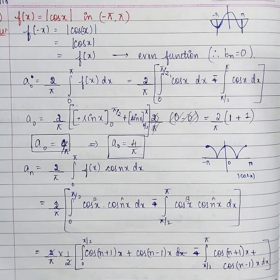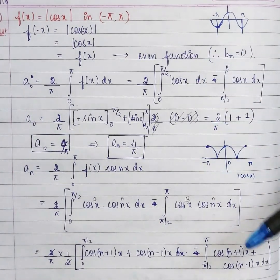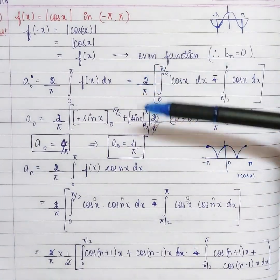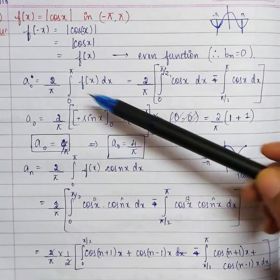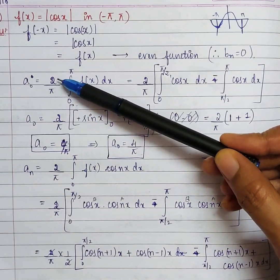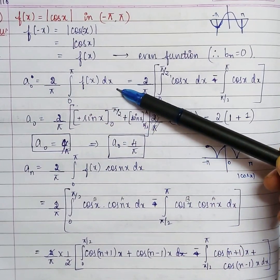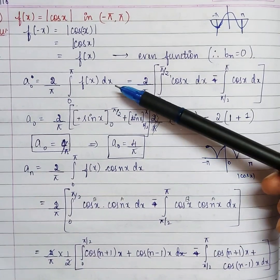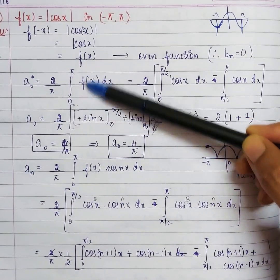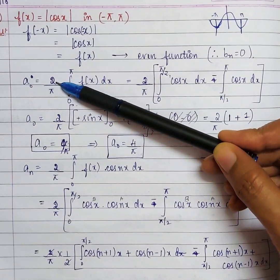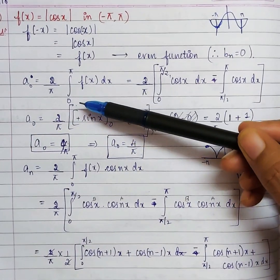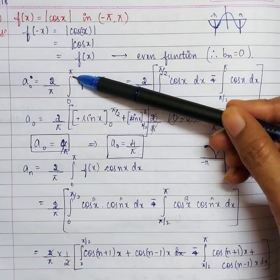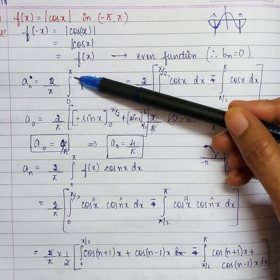Even if you don't check graphically, there's a small problem you'll face. Once we decide the function is even, we write a_0 = (2/π) ∫₀^π f(x) dx — we find over only one half of the interval and multiply by 2. But in this problem, the function from 0 to π is not uniform.